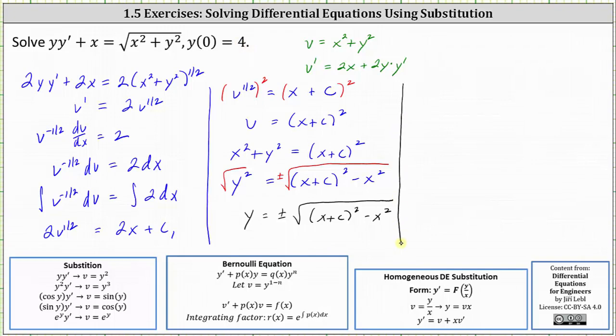So to find the particular solution we use the general solution y equals the positive square root of the difference of x plus c squared and x squared.